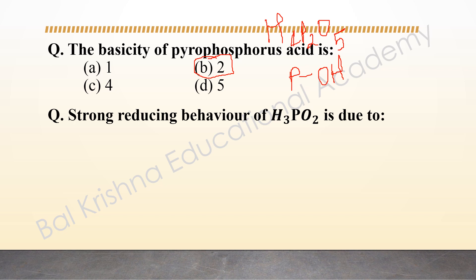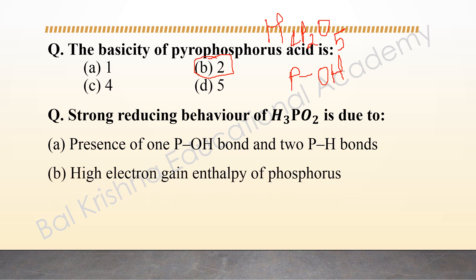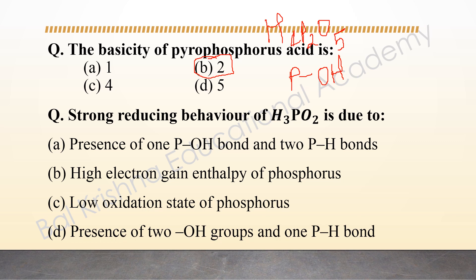The next question: the strong reducing behavior of H₃PO₂ is due to — option A: presence of 1 P-OH bond and 2 P-H bonds; option B: high electron gain enthalpy of phosphorus; option C: low oxidation state of phosphorus; option D: presence of 2 OH groups and 1 P-H bond. H₃PO₂ is hypophosphorous acid, and reducing nature of oxo acids depends on the presence of P-H bonds.